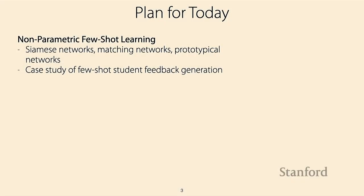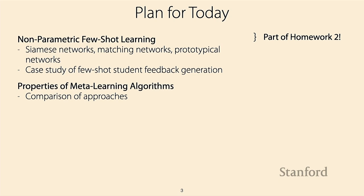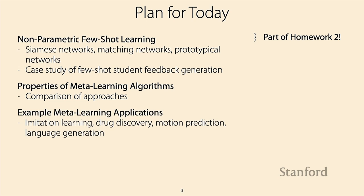Our plan for today is to focus on non-parametric few-shot learning methods — a class of methods that works really well for few-shot classification problems, and will also be part of homework two. We'll also look at a case study in education where these systems were deployed for a real live application. Then we'll wrap up this module on meta-learning algorithms by comparing the three different classes of approaches and giving a few example applications.